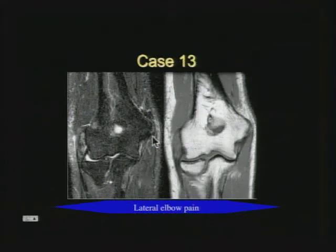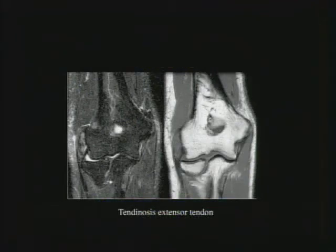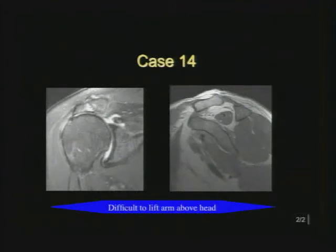In the elbow, the main things to think about are the triceps, biceps, and the tendons off the epicondyles. On the lateral side you have extensors; on the medial side you have flexors. Here we see a tendon that's thick with diffuse abnormal signal but no focal signal — that's tendinosis of the extensor tendon, or lateral epicondylitis. Most people know about this one.